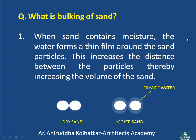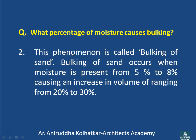When sand contains moisture, the water forms a thin film around the sand particles. This increases the distance between the particles, thereby increasing the volume of the sand. As you can see, two dry sand particles touch each other, but when the sand is moist, a film of water forms around the particles and they get separated away from each other. This results in an increase in the volume of the sand. This phenomenon is called bulking of sand or swelling of the sand.